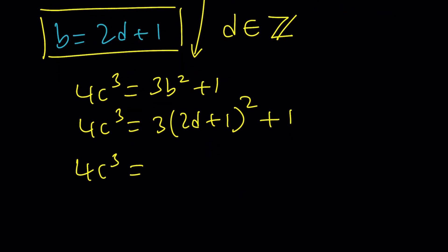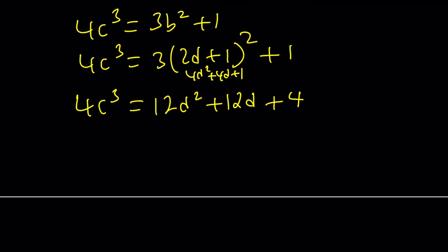This is going to be 4d² + 4d + 1. Multiply everything by 3, you're going to get 12d² + 12d + 3 + 1, which is plus 4. Great. Notice that everything is divisible by 4, so we can go ahead and simplify this expression.